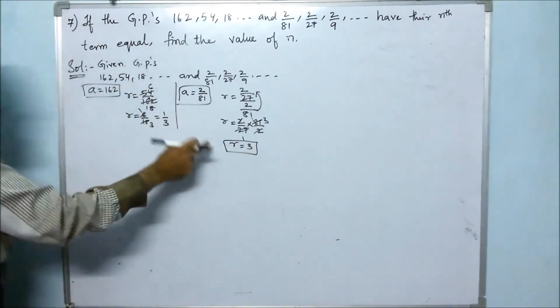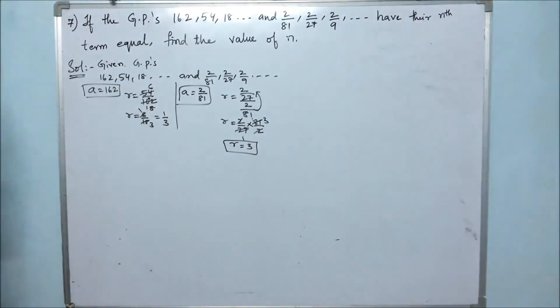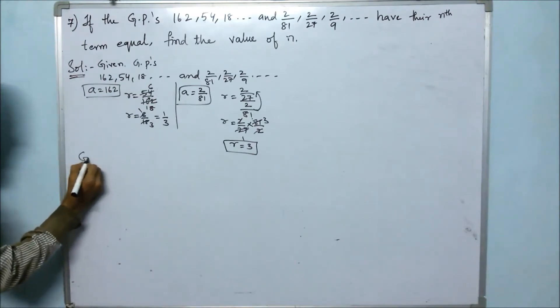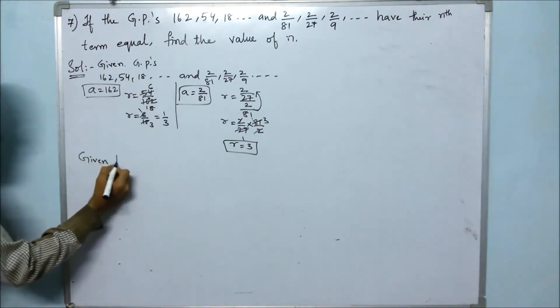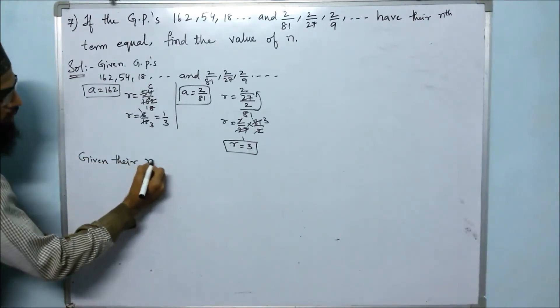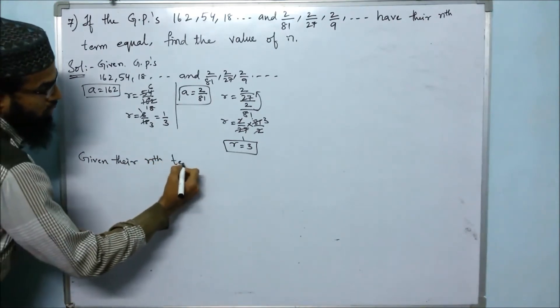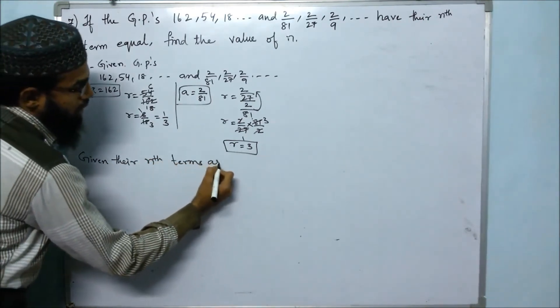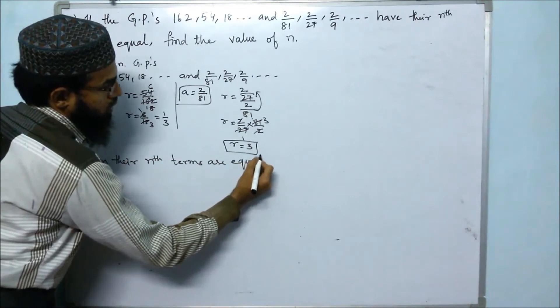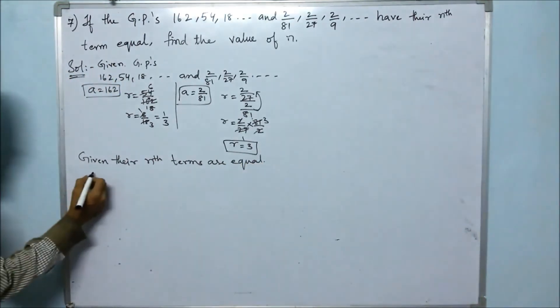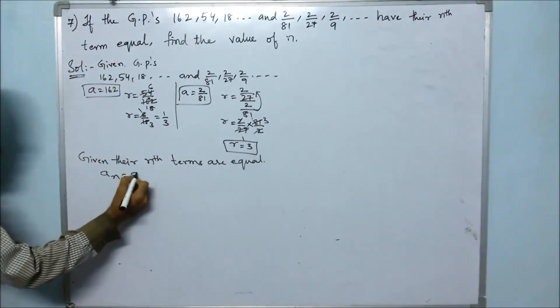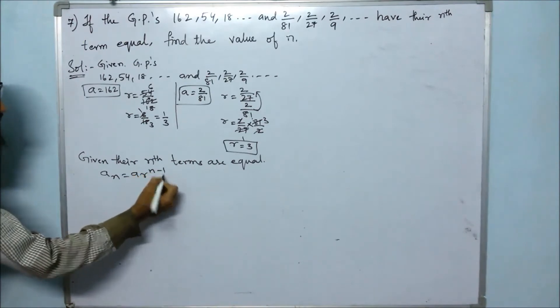Now we have A and R for both GPs. Given that their nth terms are equal, we use the formula: An = A times R to the power of n minus 1.